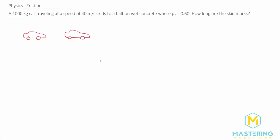Welcome to Mastering Solutions. This physics problem gives us a car that's 1,000 kilograms traveling at a speed of 40 meters per second. It skids to a halt on wet concrete with a coefficient of kinetic friction of 0.6, and we have to figure out how long the skid marks are.